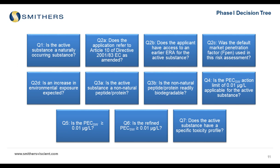Once the answer is no, we can stop and prepare the risk assessment. Question 7 asks: does the active substance have a specific toxicity profile? This covers things like endocrine active substances or antimicrobials. If there is that specific toxicity profile, the decision tree will need certain modifications. For an endocrine drug where the daily dose is less than two, having that toxicity profile doesn't necessarily stop the assessment — it just means you have to tailor the assessment because of that toxicity profile.